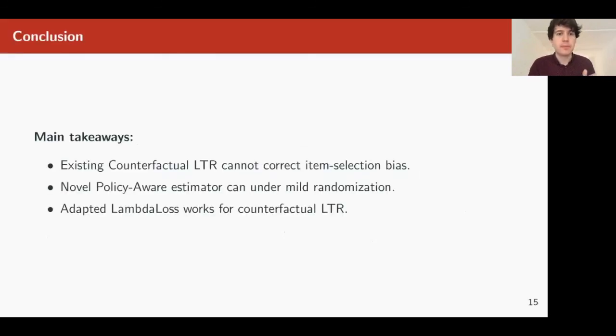To conclude, existing counterfactual learning to rank methods are very much affected by item selection bias. So if you apply them to top-k ranking scenarios, they're bound to be biased. We introduced a new estimator that can deal with this bias, but it needs some randomization. The trick is it takes into account the effect of randomization to correct for it. Finally, we've also looked at lambda loss and shown that it's very straightforward to adapt it to work for counterfactual learning to rank, meaning that supervised learning to rank and counterfactual learning to rank don't need to be different areas. Thank you very much.